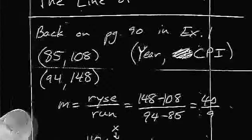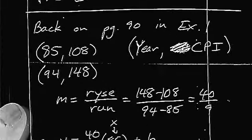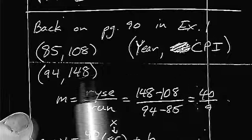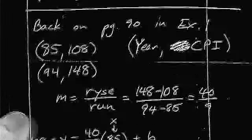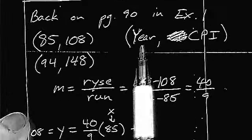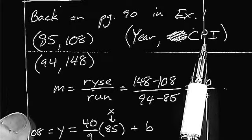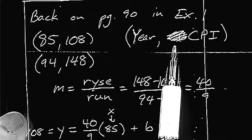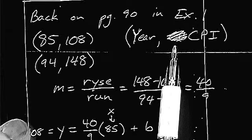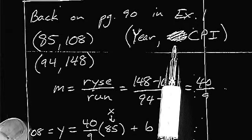You need to be comfortable with looking at data. Back on page 90, in example 1, they used these two coordinates. That was the year and the CPI index. Yeah, I put CBI, but that's totally different. That's from the Mentalist TV show, so many of you probably don't know that.